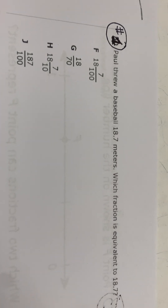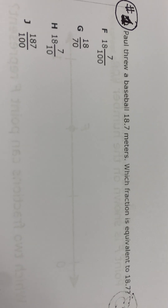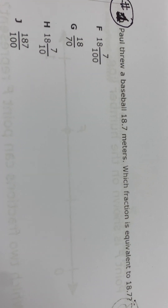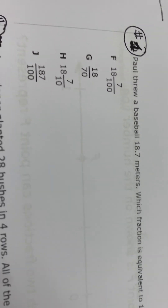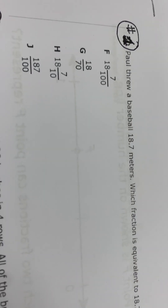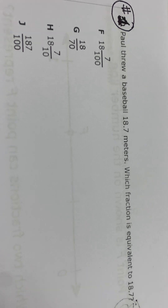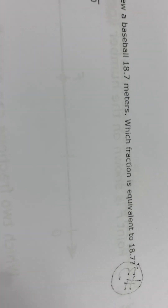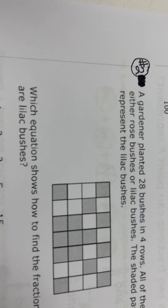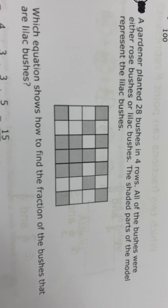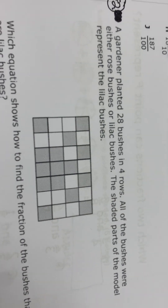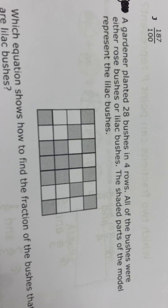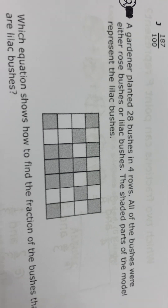Number one: Paul threw a baseball 18 and 7 tenths meters. What fraction is equivalent to 18 and 7 tenths? There's your answers. Remember, you can pause the video at any time, rewind it if you need to go back, listen to the question again. Show all your work, please, and use your strategies that you learned in class.